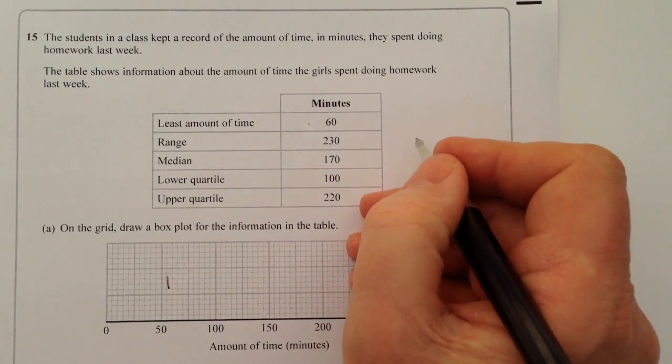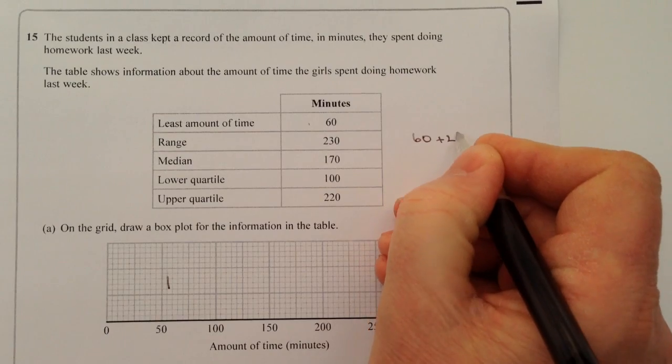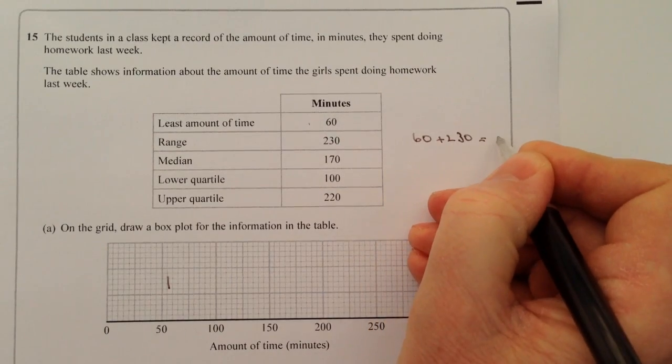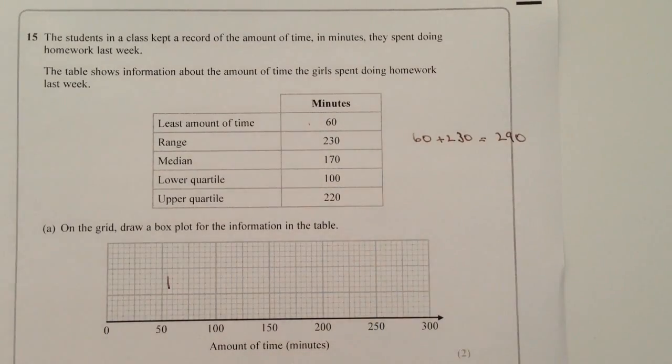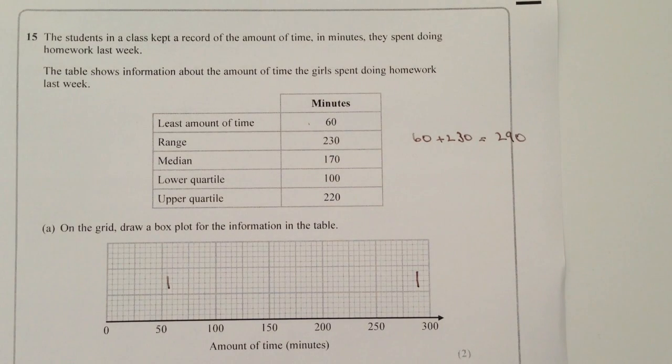Well that means that 60 plus 230 will give me 290. So my maximum amount over here is going to be around about there. So this is represented as 60 and this is represented as 290.